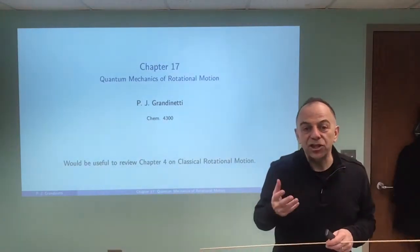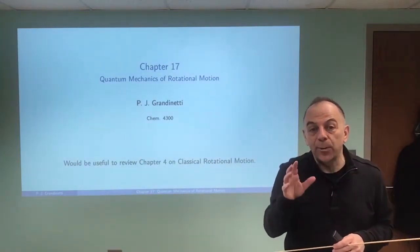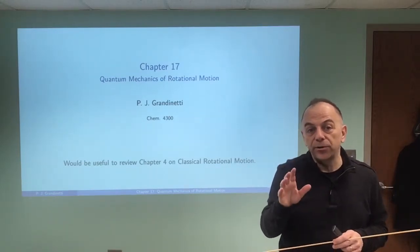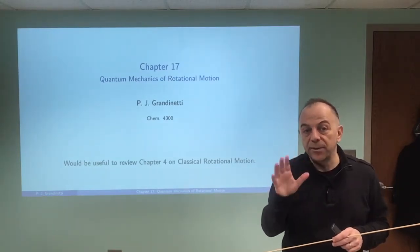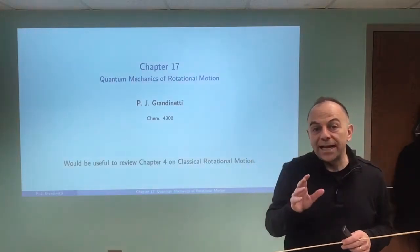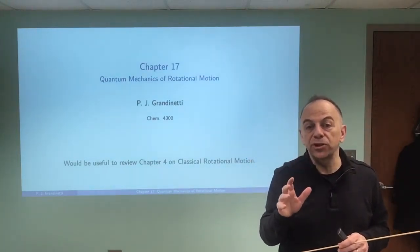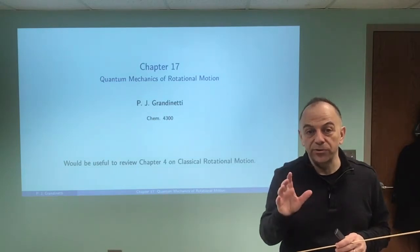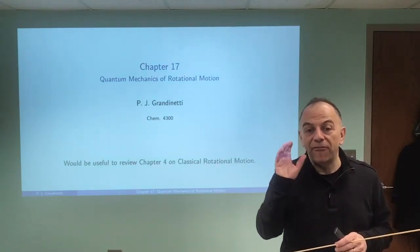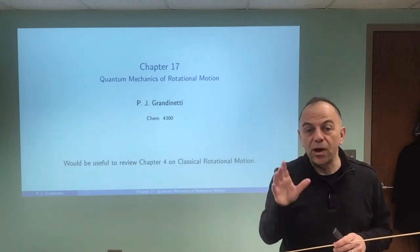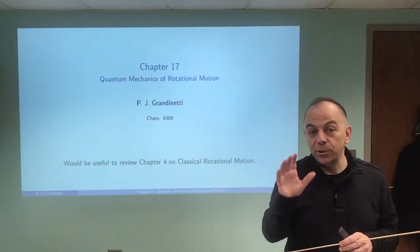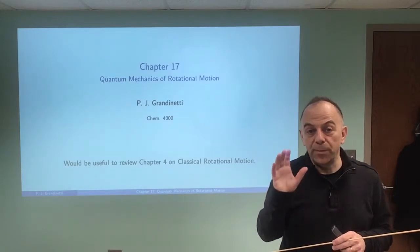In the last chapter, we worked out the angular momentum operators for a single quantum particle moving relative to some fixed origin. In this chapter, we're going to examine the quantum mechanics for the rotational motion of a system of particles, and those particles in the system have fixed positions relative to each other. This situation is called the rigid body.